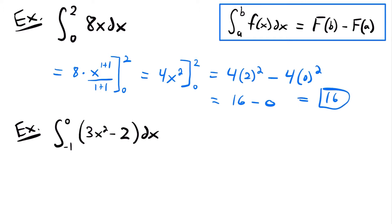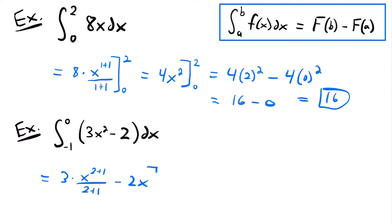That is the answer to this definite integral. For our second example, we have the integral from negative 1 to 0 of 3x squared minus 2 times dx. Let's start by integrating this function. This will be equal to 3 times x to the power of 2 plus 1 divided by 2 plus 1, minus 2x, and that will still be evaluated from negative 1 to 0.